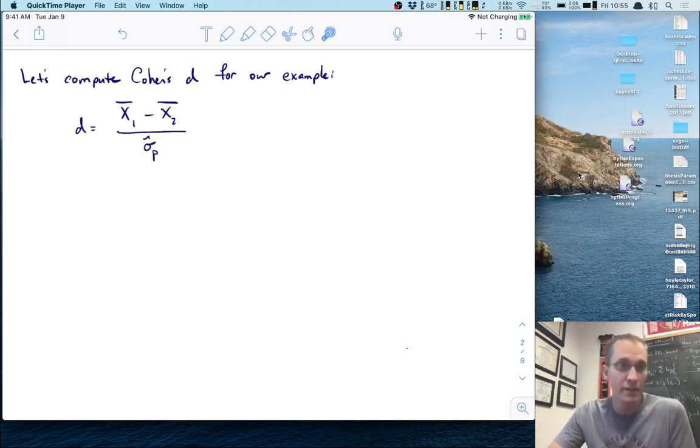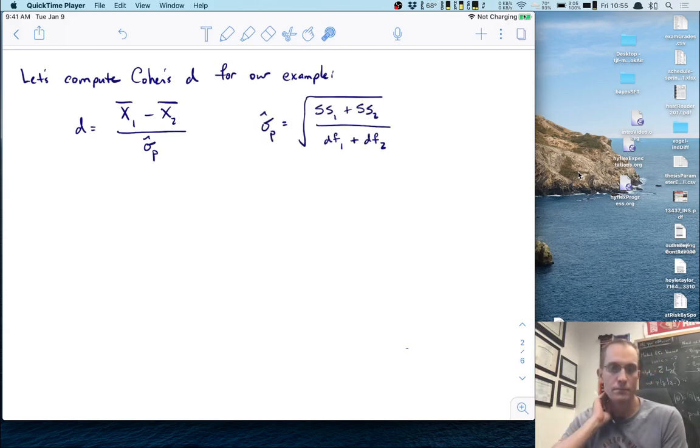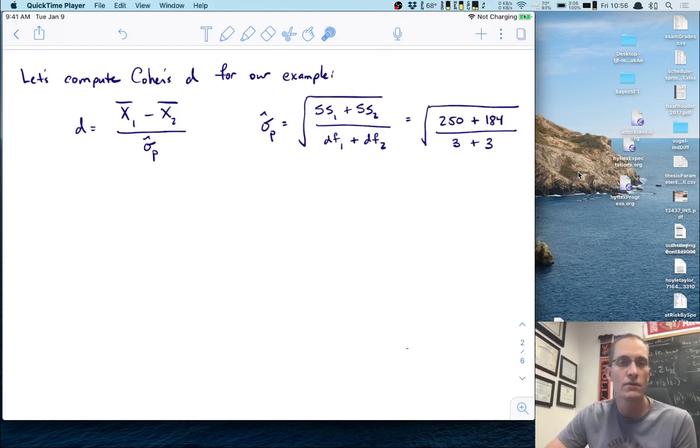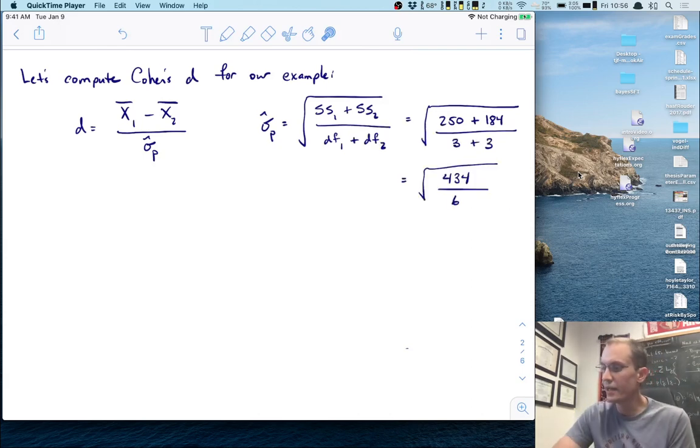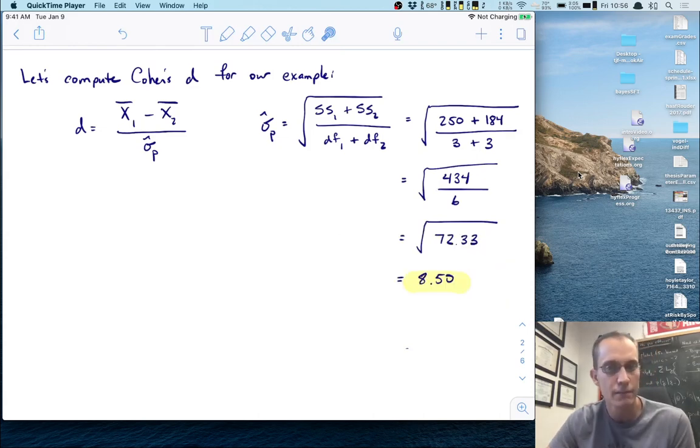Cohen's d is the difference between the two means divided by the pooled standard deviation. The pooled standard deviation is the square root of the SS over the dfs. Putting in the values, we get the square root of 250 plus 184 over 3 plus 3. We have 4 in each group and the degrees of freedom is the group size minus 1. This gives us the square root of 434 over 6, which is the square root of 72.33, about 8.50.